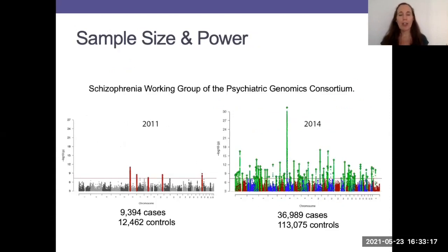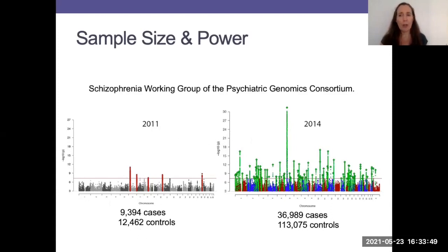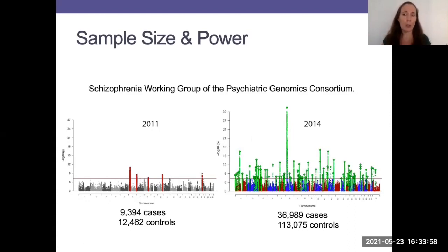Another important consideration is sample size, and whether you have enough power to detect an effect with any kind of reliability. Sample size is something we're now very familiar with in genome-wide association studies — it's been one of the big reveals of work over the last decade or so. This example is from the schizophrenia working group of the Psychiatric Genetics Consortium, with an early paper having about 9,000 cases and 12,500 controls, which once upon a time seemed like a lot of people, but in GWAS now it doesn't.